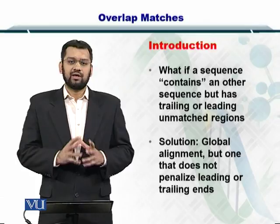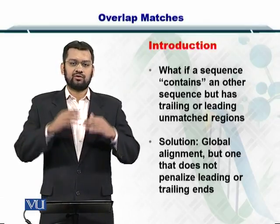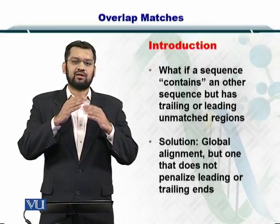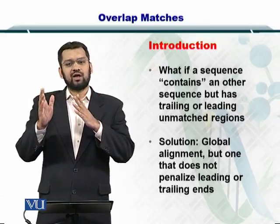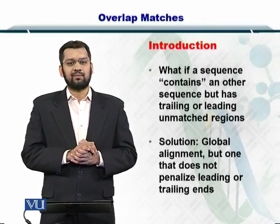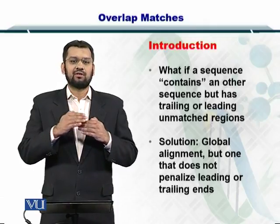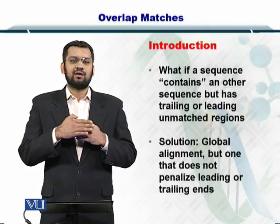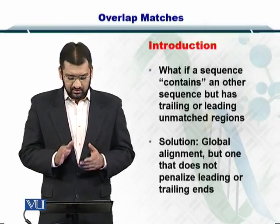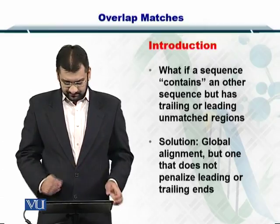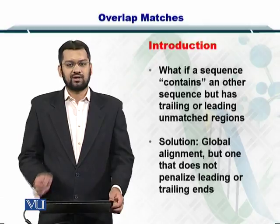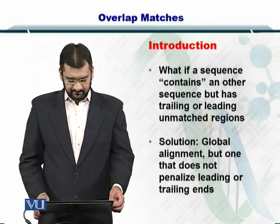Now, what if a situation arises wherein the two sequences, they are overhanging each other. That is one part of the sequence is outside the other sequence. I will show you with an example. So the idea is that in case the two sequences cannot be matched globally, there can be some overhanging or overlapping portions in the sequence. So the solution is the global alignment as we were just doing, but with just one modification.